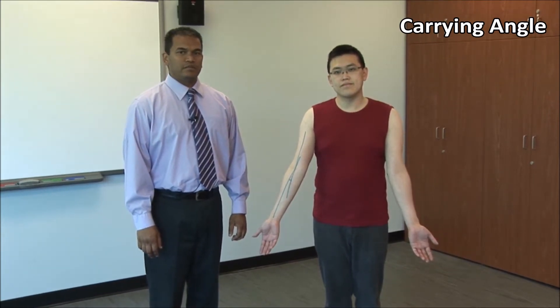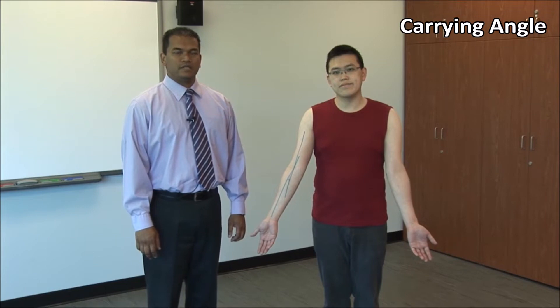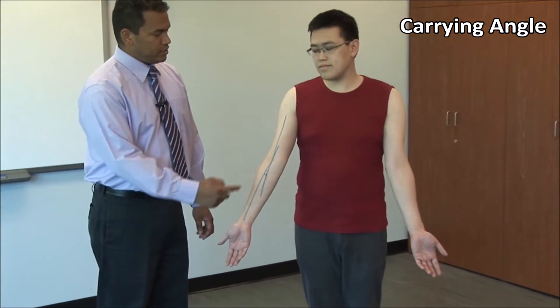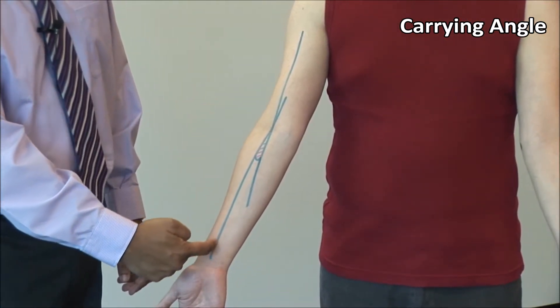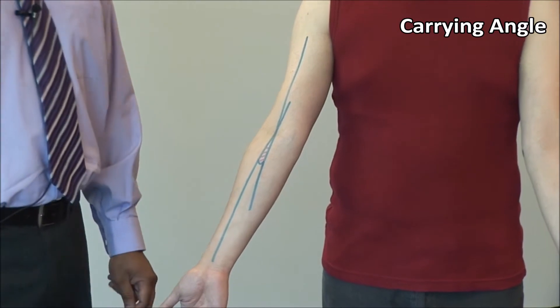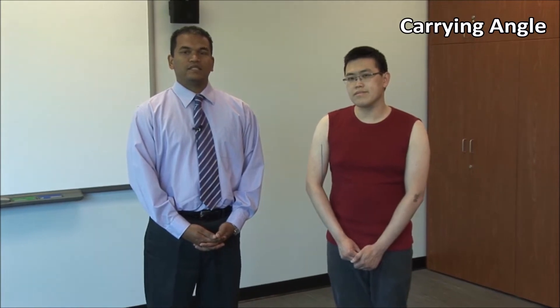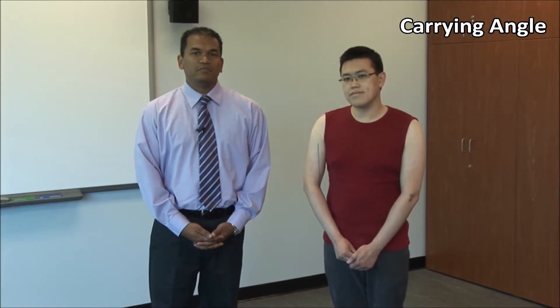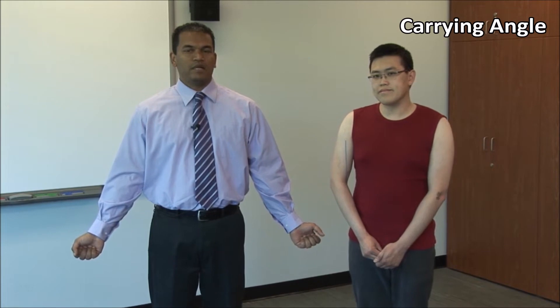On inspection, look at the carrying angle. The elbow has a normal valgus deviation. You can look at this from the front or the back, with the elbow extended and the palm in supination — this is also known as the anatomical position. Imagine a line drawn through the mid-shaft of the humerus intersecting with another line drawn through the middle of the forearm. The angle of intersection is the carrying angle, normally about 5 to 10 degrees in men and 10 to 20 degrees in women. The carrying angle is important so that we don't crash our hands into our hips while walking, and also allows us to carry loads without having to abduct our shoulders.